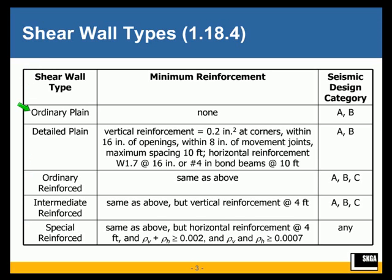We'll be focusing on only three of them. There are some unreinforced shear walls — both ordinary plain and detailed plain. The detailed plain has some prescriptive reinforcement, but that is not counted on for design. Just the unreinforced masonry itself is counted on for design. We'll not be covering those.